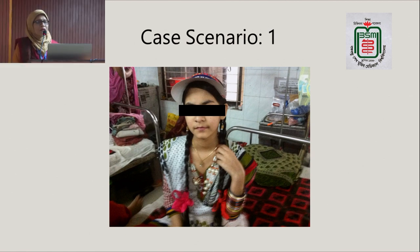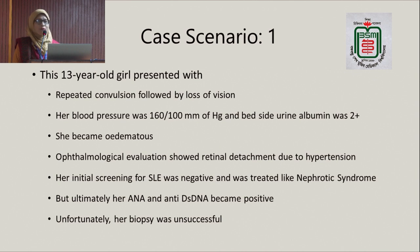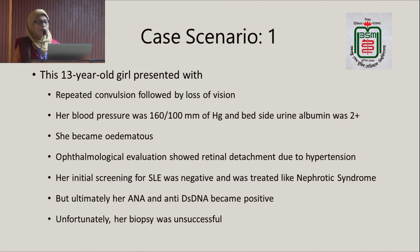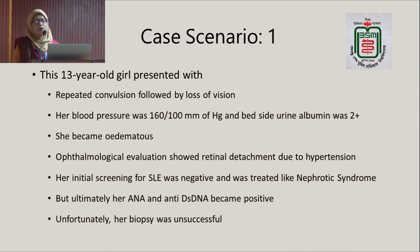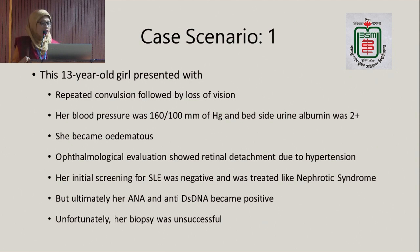I will start with a few case scenarios. This is a beautiful young girl of 13 years who presented to us with repeated convulsions followed by loss of vision. Her blood pressure was found to be 160 over 100 mmHg. Nobody had measured her blood pressure before that, and her bedside urine albumin was 2+. She ultimately became edematous and ophthalmological evaluation showed retinal detachment due to hypertension. Her initial screening for SLE was negative and she was treated like nephrotic syndrome due to proteinuria, but ultimately her ANA and anti-dsDNA became positive. We did a renal biopsy but unfortunately missed to procure adequate tissue.